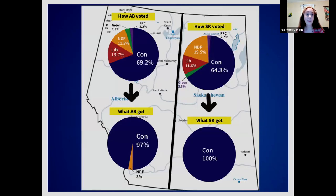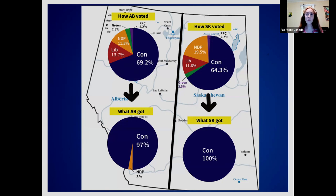Regional sweeps are closely connected to distorted results. One party can sweep every seat in an area despite voters being quite diverse. In the 2019 federal election, about 30 to 40 percent of voters in Alberta and Saskatchewan did not vote Conservative — but you wouldn't know it from parliament. The result was just one non-Conservative seat across both provinces, meaning those voters had essentially zero representation in government.